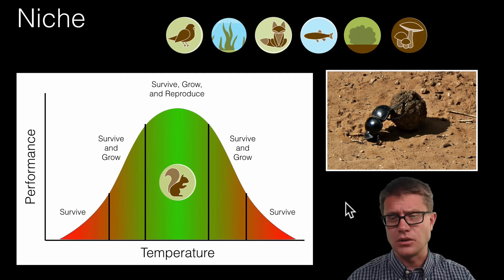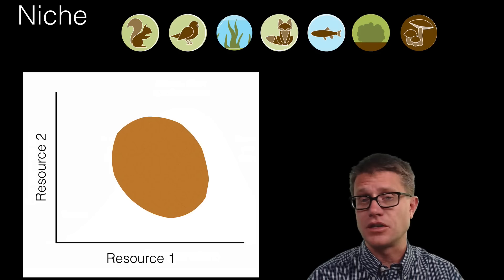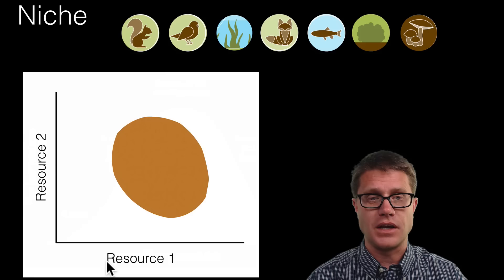But also what we are using as a food source. This dung beetle for example exploits a niche by taking dung, rolling it up and using that as an eventual food source. What else determines it then? Not only the environment but the resources, the food that you need or the space you need to live in.